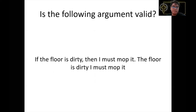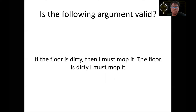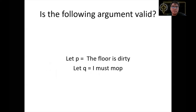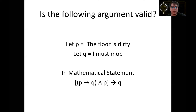Let's try a simple argument: 'If the floor is dirty, then I must mop it. The floor is dirty. Therefore, I must mop it.' Let P = 'The floor is dirty' and Q = 'I must mop it.' The symbolic form is: (P → Q) ∧ P → Q. We must construct a truth table to determine whether this statement is a tautology — meaning it is always true in all possible combinations of P and Q.